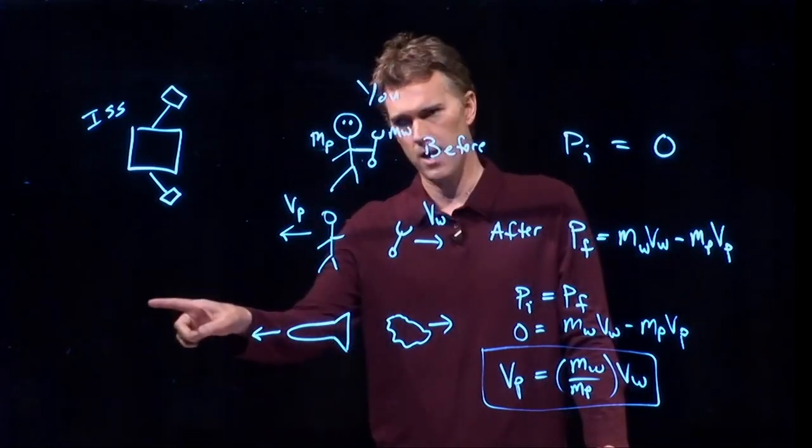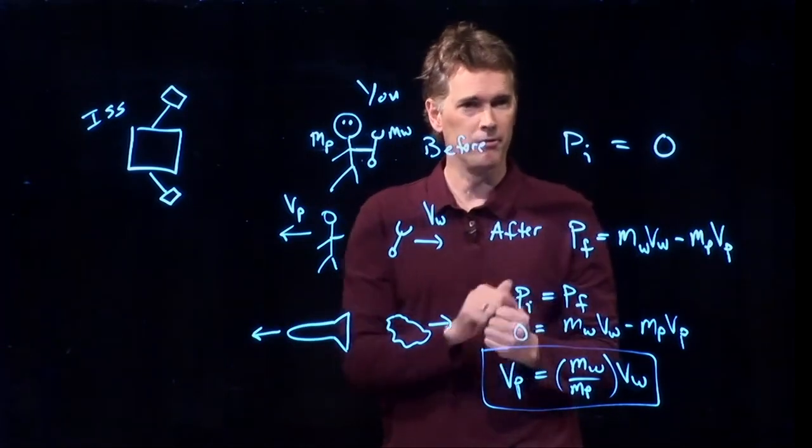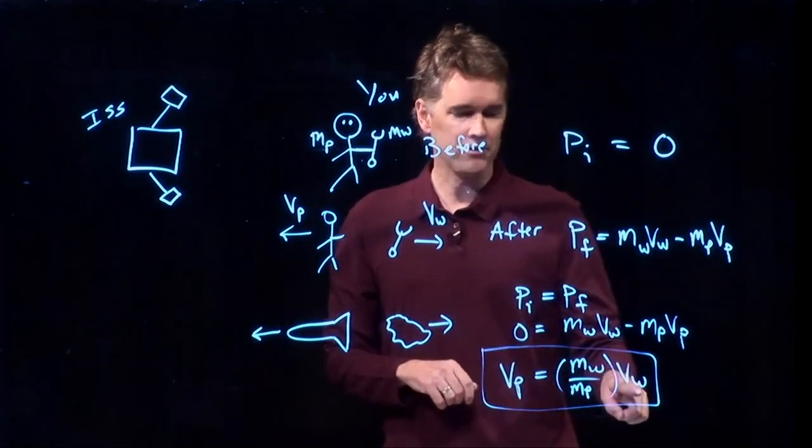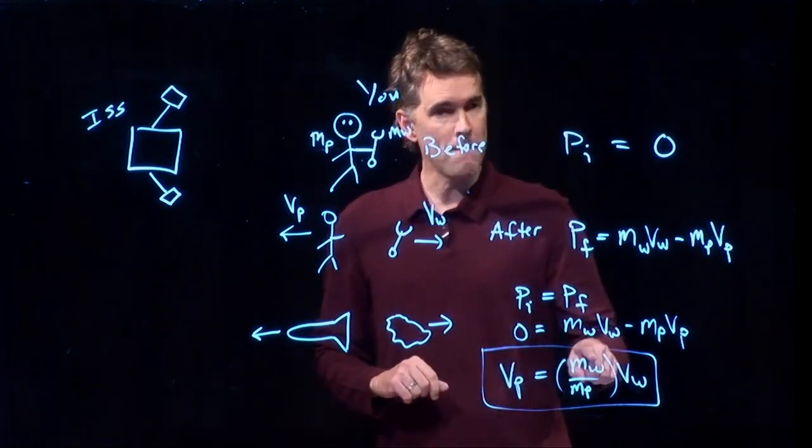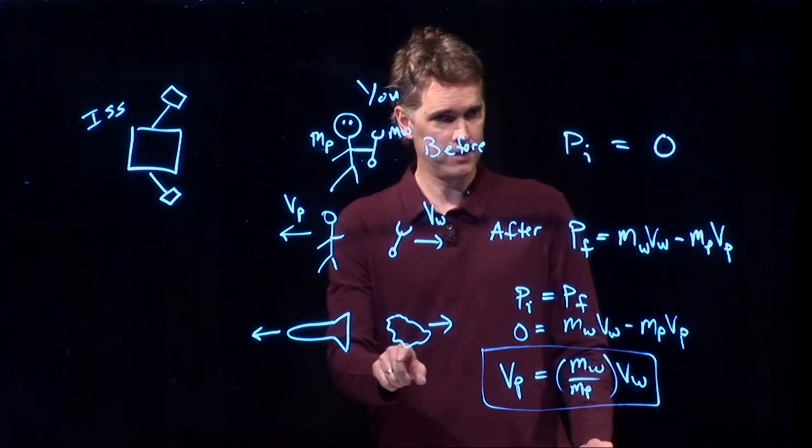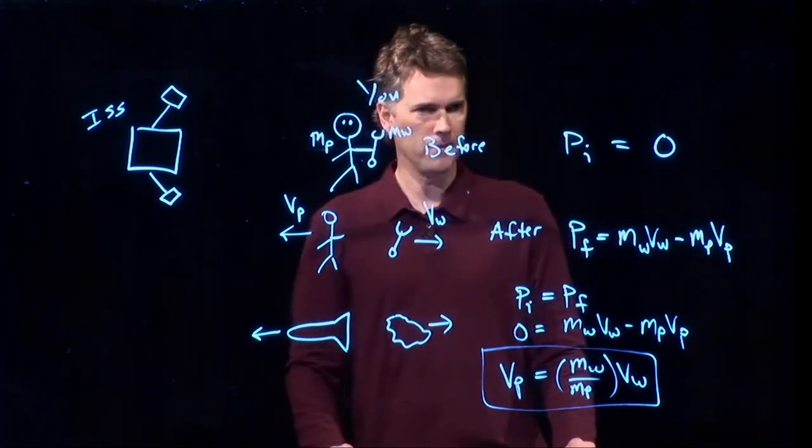The only reason the rocket flies away is because it's burning stuff up and spitting it out the back very fast. The faster it does that, the faster the rocket's going to go. The more mass it can spit out the back, the faster the burn rate, the faster it will go the other way.